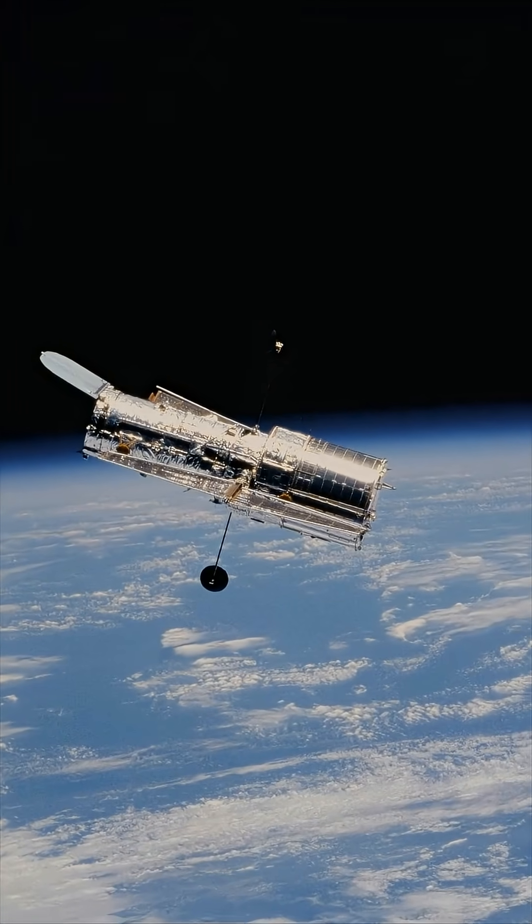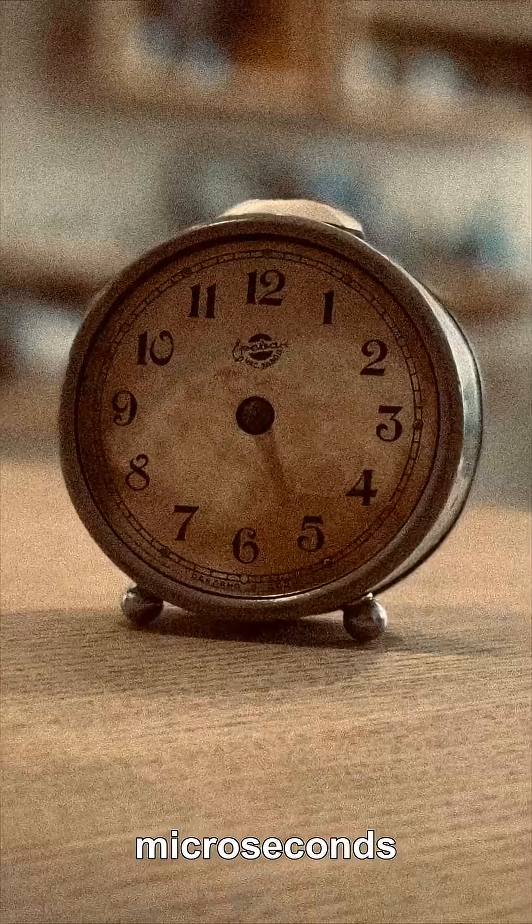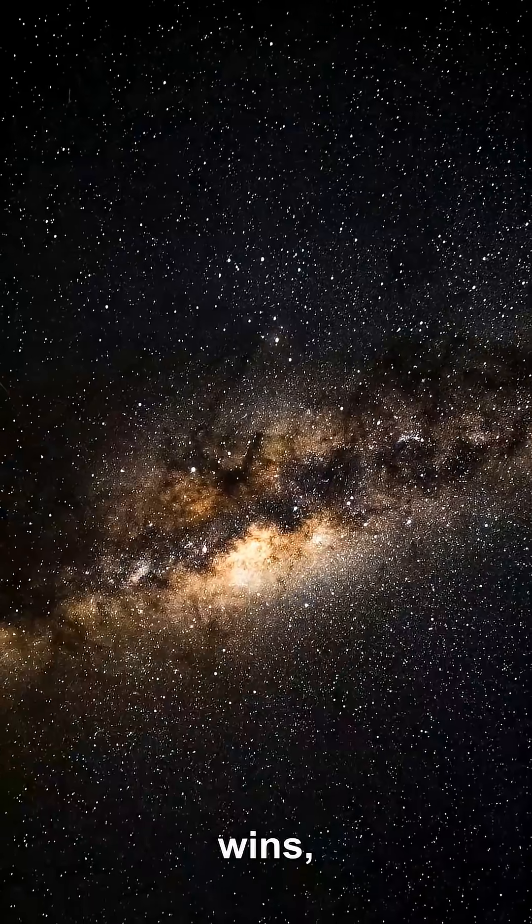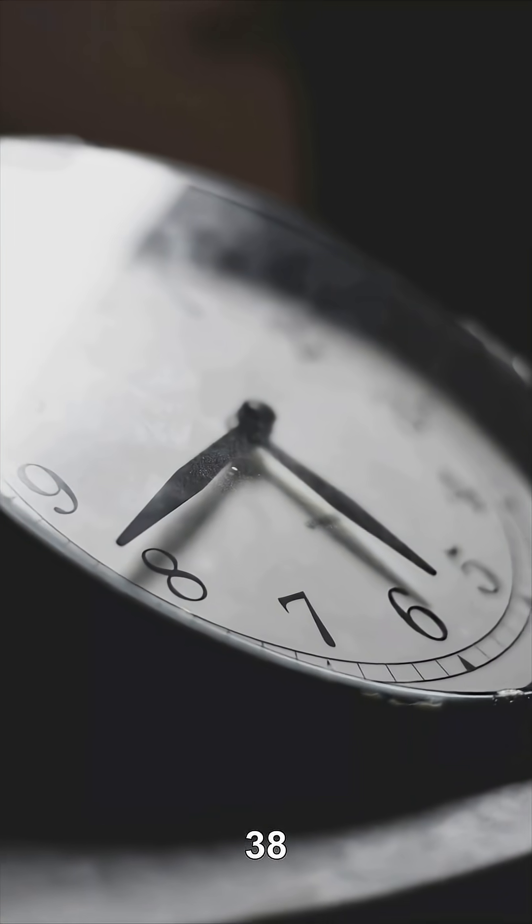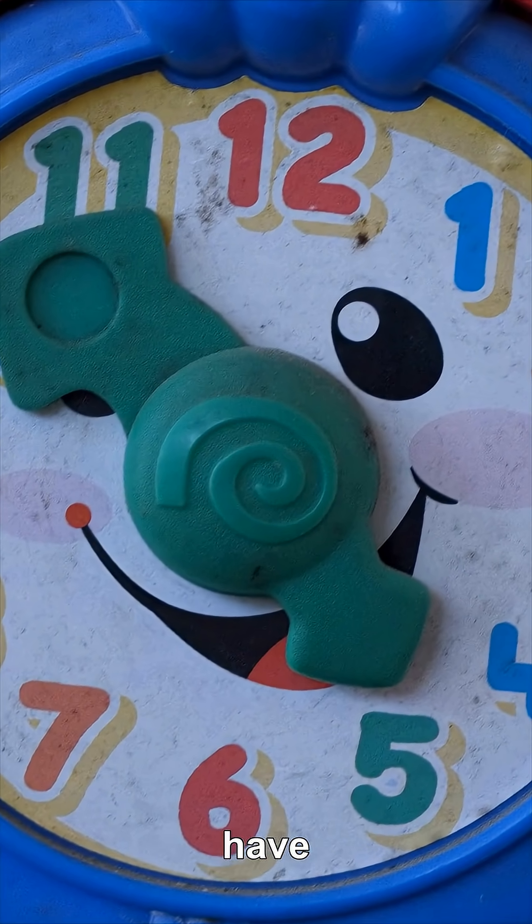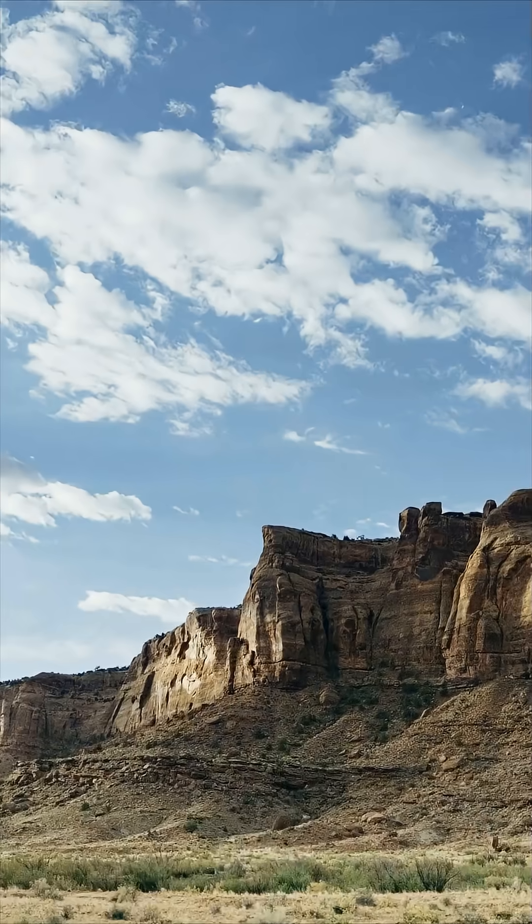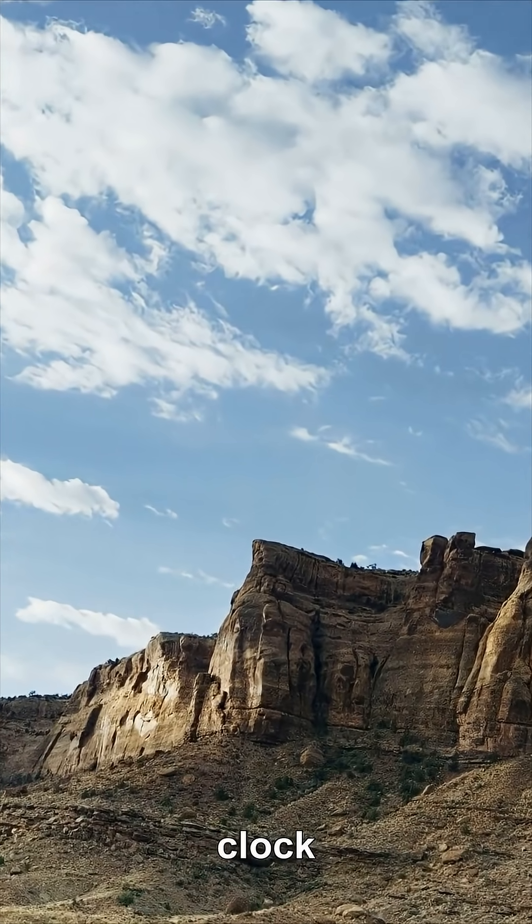The gravity effect wins, so the satellite clock ends up about 38 microseconds per day ahead—exactly the mismatch engineers have to remove. The final twist: there's no single universal 'now,' even on Earth, because a clock on a mountain or at your head ticks a tiny bit faster than one at sea level or at your feet.